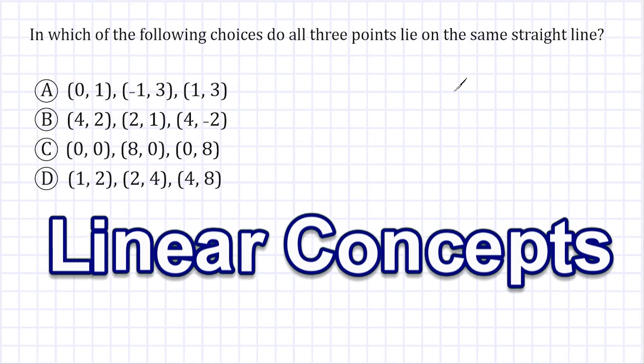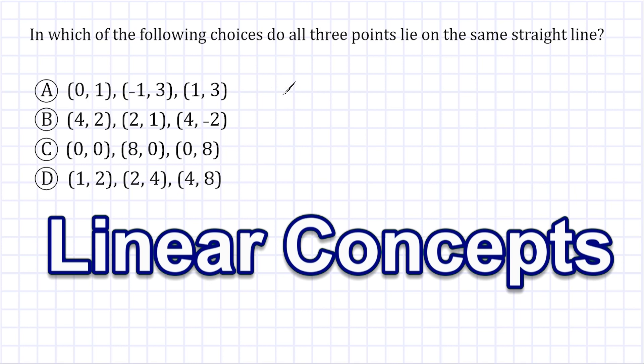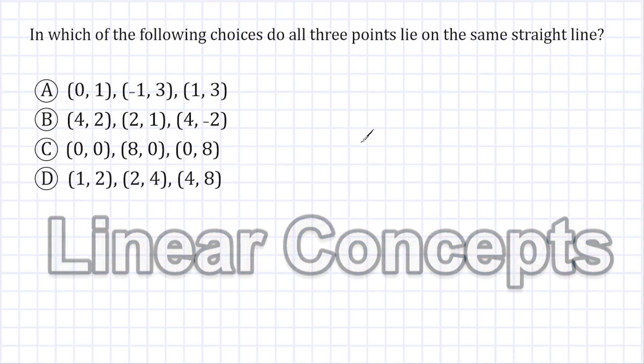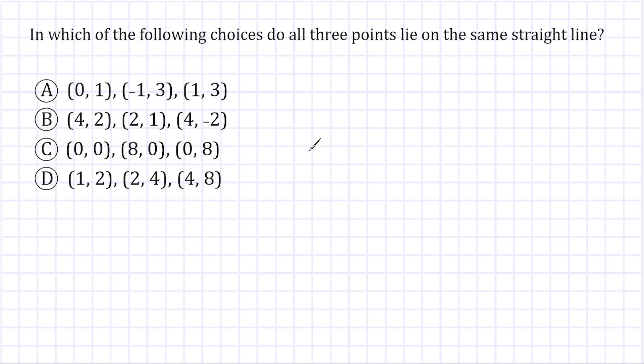Alright, for this problem it says we have to figure out which of these following choices do all three points lie on the same straight line. Now there's a couple of ways to do this problem. We could just graph each out of these points and then just see if it forms a straight line.